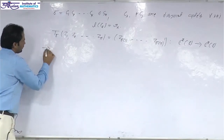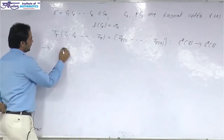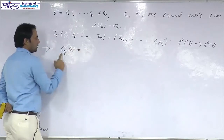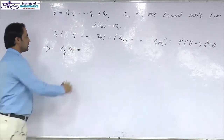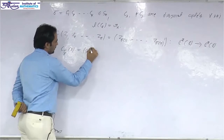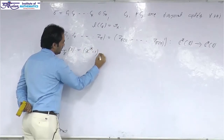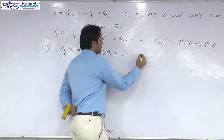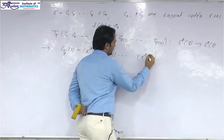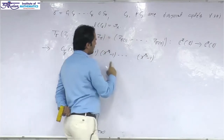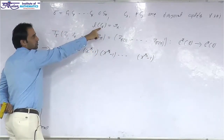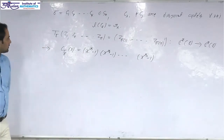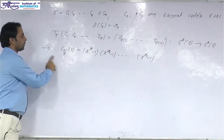The first property: the characteristic polynomial of T_σ is (x^{r₁} - 1)(x^{r₂} - 1)···(x^{rₖ} - 1), where rᵢ is the length of each disjoint cycle. This is the characteristic polynomial of this permutation operator.